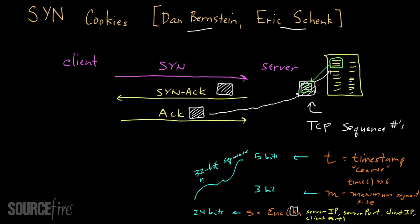We'll call that 32-bit sequence number N. As part of the SYN ACK, the server sends N as the sequence number in the SYN ACK packet. Per the TCP standard, when the client receives any sequence number, it has to respond back with the value N plus 1. The server then receives N plus 1, constructs N by subtracting 1, and breaks N apart into its three components: the first five bits represent the timestamp, the next three bits represent the maximum segment size encoding, and the final 24 bits represent the cryptographic value S.